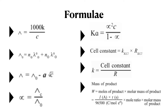Mass of product W is equal to moles of product multiplied by molar mass of product. Moles of product is given by I times T upon 96500 times mole ratio, so that multiplied by the molar mass gives the mass of the product. I is the current, T is in seconds, 96500 is Faraday's constant, and mole ratio is obtained from the reaction equation.